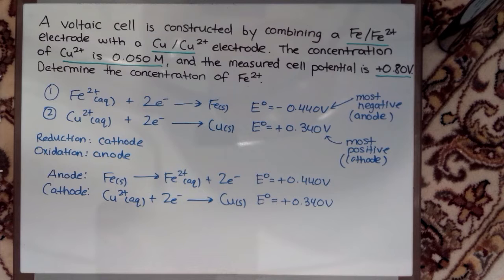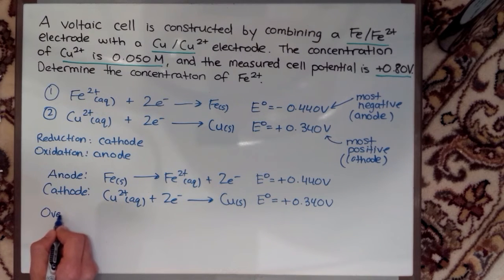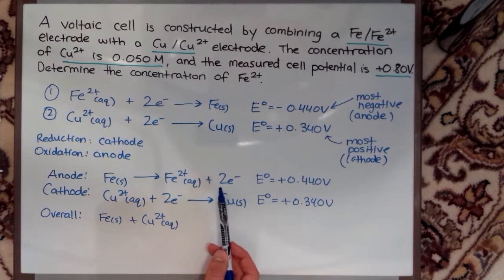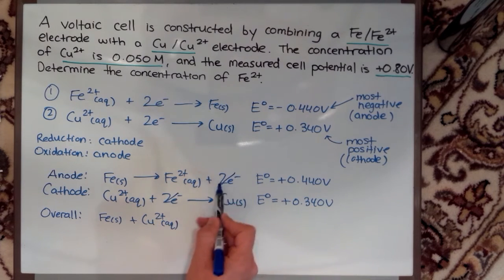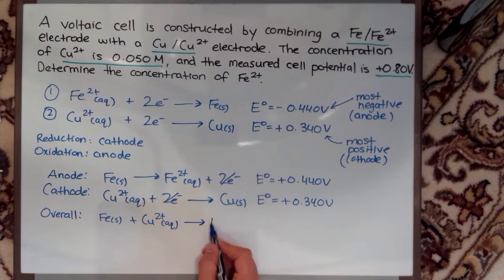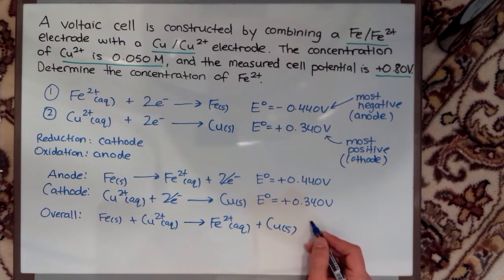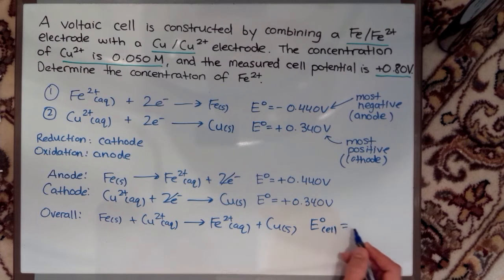Now I can get my overall reaction. I just need to add the two reactions and add the two potentials. I have Fe solid plus Cu2+ aqueous. I'm going to think ahead a little bit and see that there's two electrons on the left side and two electrons on the right side, so I can cancel these two electrons out. All I have left is Fe2+ aqueous plus my Cu solid, and now this becomes my standard cell potential which is 0.780 volts.